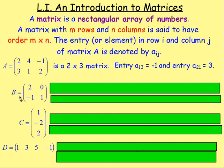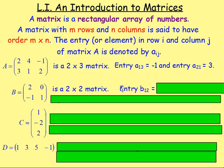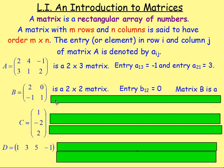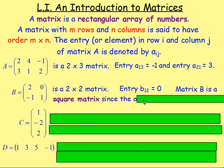Matrix B — what is the order of this? It is a two by two matrix. It has two rows and two columns. The rows always come first. Entry B one two would equal — zero. It would be zero because you're in the first row and the second column, and that would be this entry here: zero.